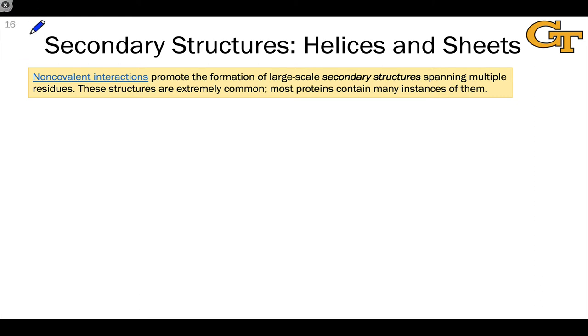The primary sequence tells us about the constitution or connectivity of a polypeptide, but it doesn't give us any three-dimensional information. To begin to understand the three-dimensional structure of a polypeptide, we need to start thinking about secondary structures.